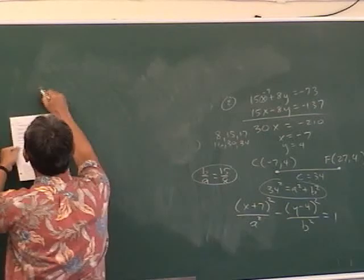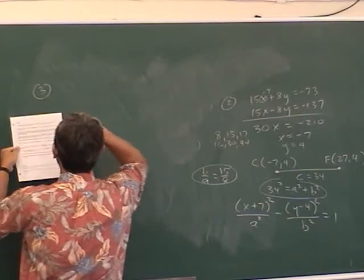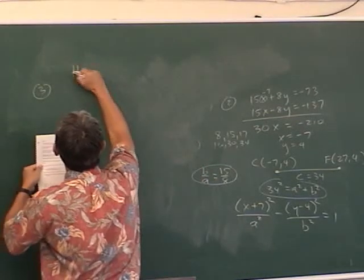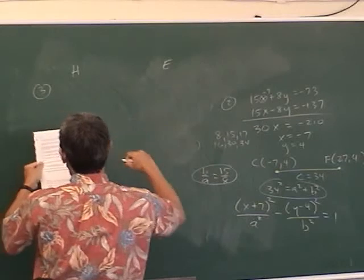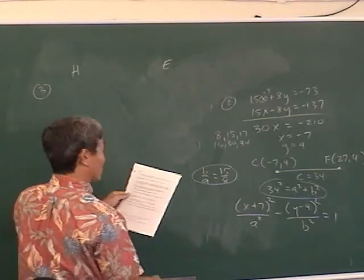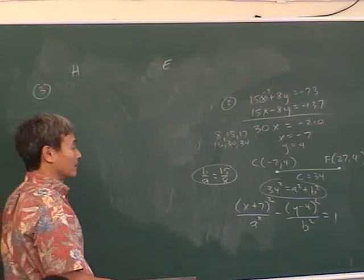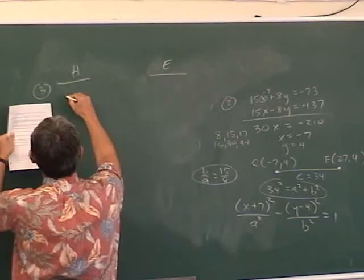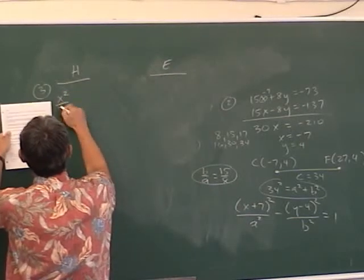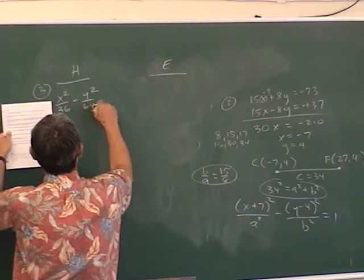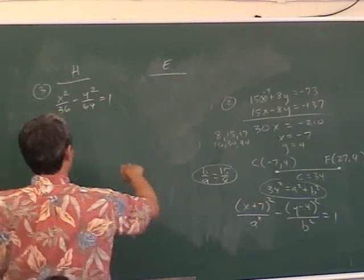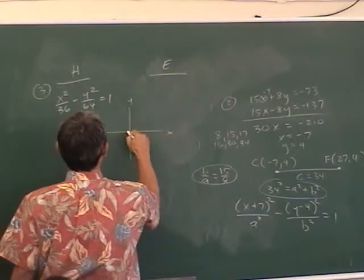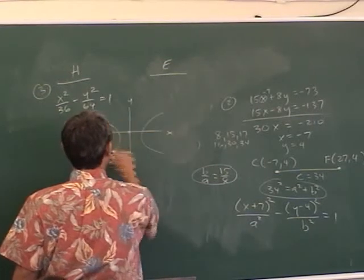Number three — this is the only problem on this worksheet we haven't seen before. The eccentricity of a hyperbola is one more than the eccentricity of an ellipse, and they share the same foci. The equation of the hyperbola is x² / 36 minus y² / 64 equals 1 — this is a left-right hyperbola. Let me draw a picture: center at the origin.